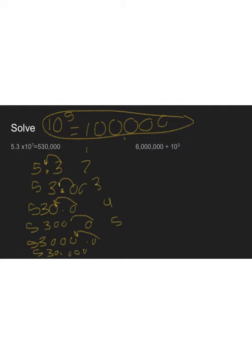Another way to use it: I have 6 million divided by 10 to the third power. That means three zeros — 1, 2, 3. We cancel three zeros from 6,000,000, and I'm left with an answer of 6,000. It kind of speeds things along.